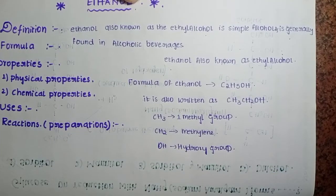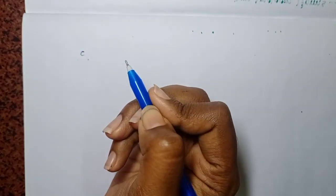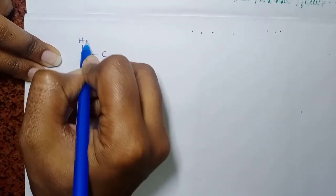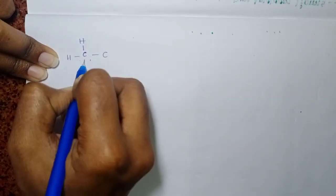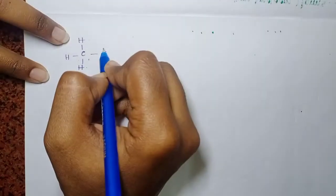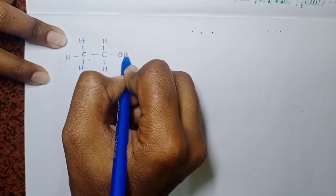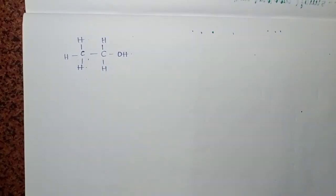This is the structure of ethanol. Two carbons are present - one carbon consists of three hydrogens, another carbon consists of two hydrogens, and the functional group OH or hydroxyl group is present. CH3 is the methyl group, CH2 is the methylene group, and OH is the hydroxyl group.